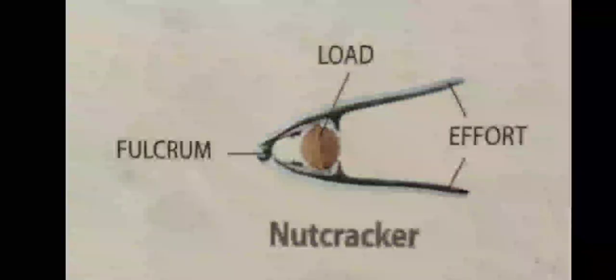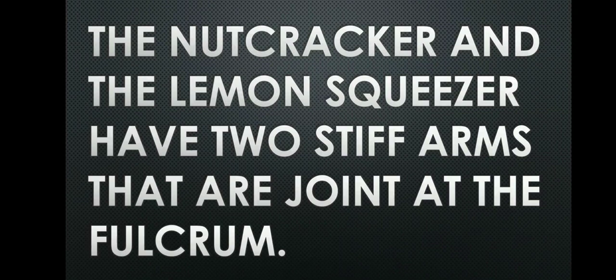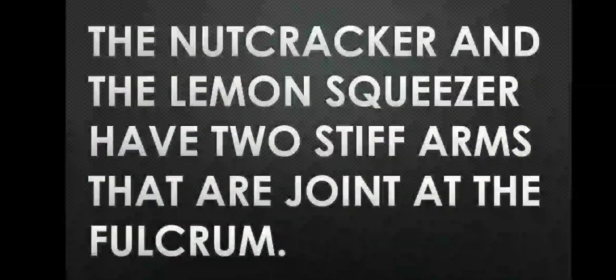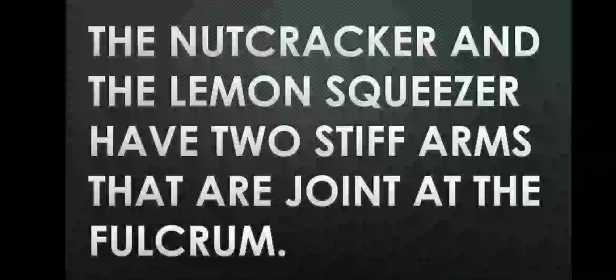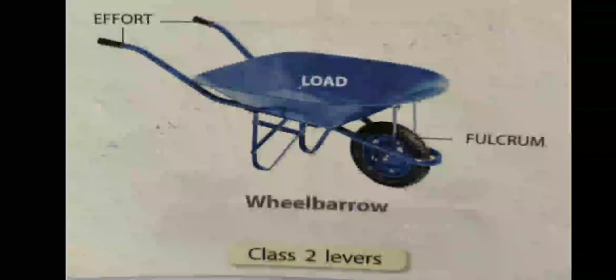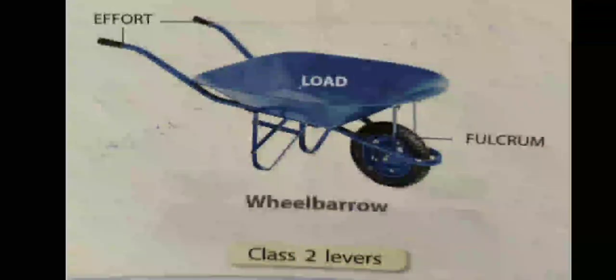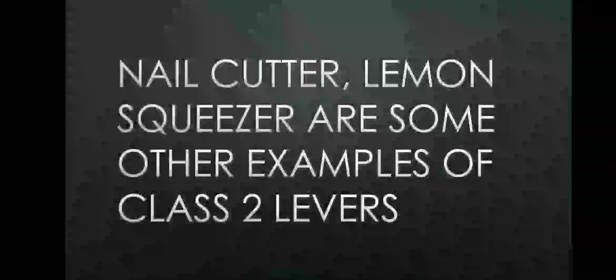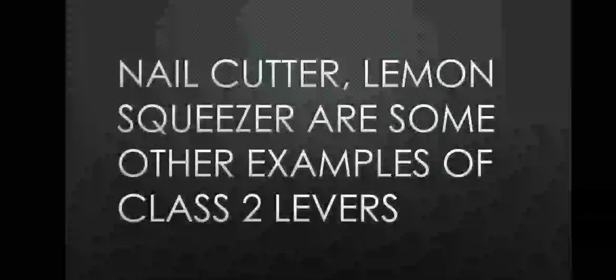Nutcracker is another example of Class 2 lever with load in the center. The nutcracker and the lemon squeezer have two stiff arms that are joined at the fulcrum. Wheelbarrow is another example of Class 2 lever with load in the center. Nail cutter and lemon squeezer are some other examples of Class 2 levers.